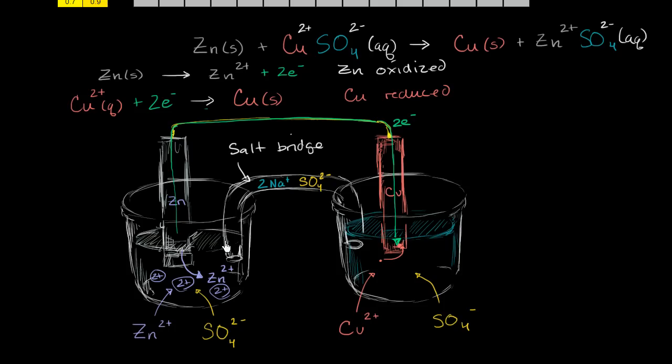And in this diagram, we picked sodium sulfate as our salt. So for every sulfate anion, you have two sodium cations. And so what's going to naturally happen here?